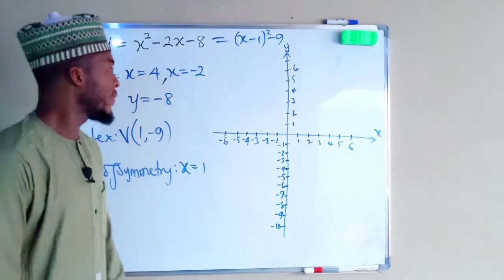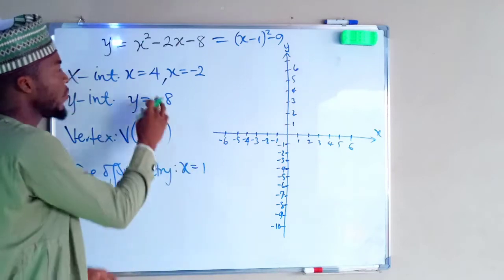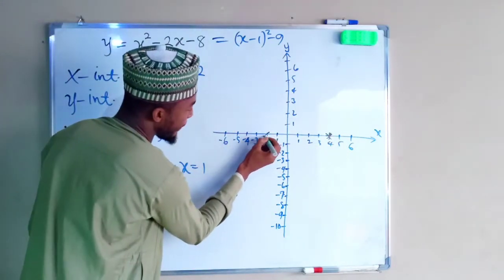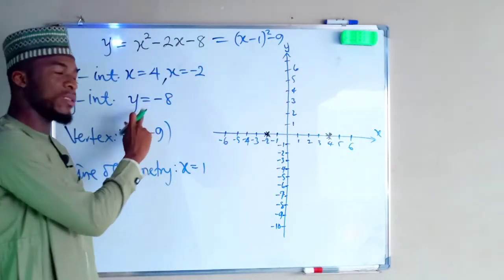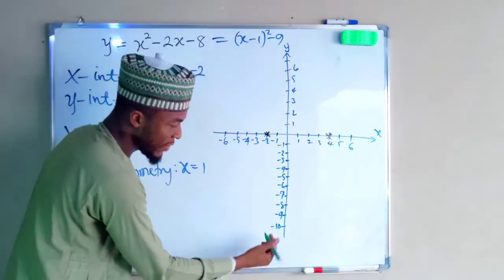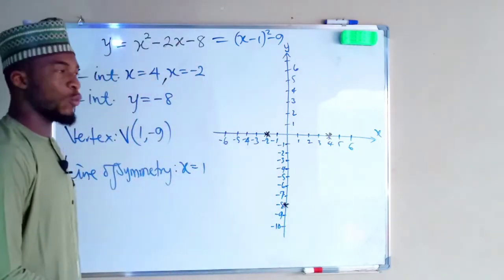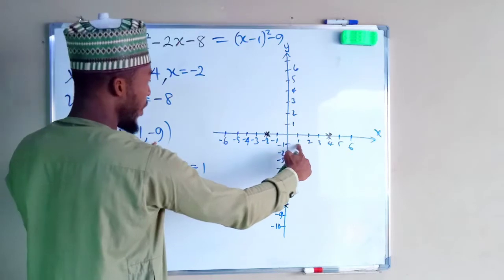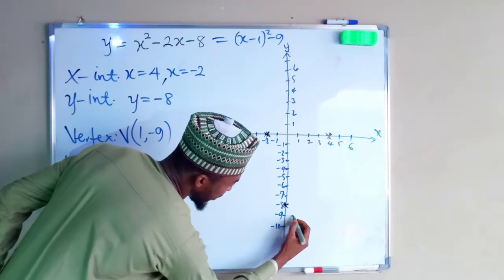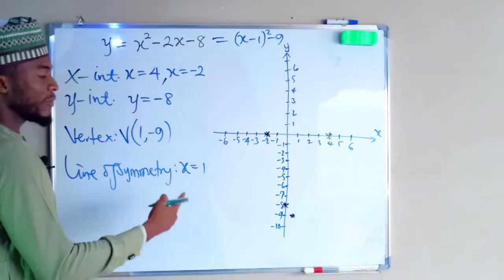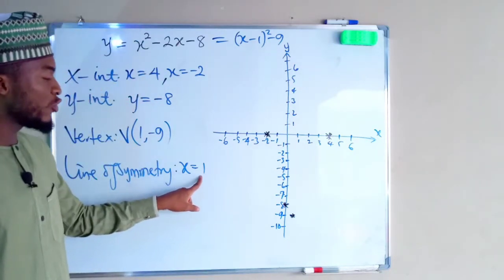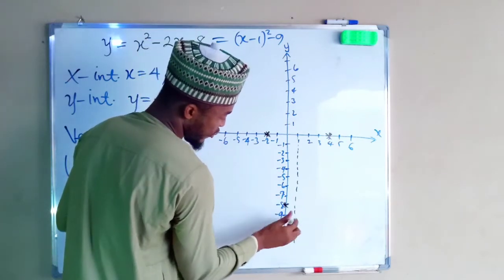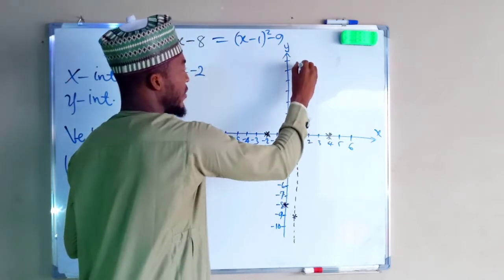Let us plot this information on our graph. The x-intercepts are positive 4 and negative 2 — I mark both points. The y-intercept is negative 8, which is where the curve touches the y-axis. Then the vertex, where the curve takes a turn, is at x equals 1, y equals negative 9. And the line of symmetry, the line that divides the parabola into two equal halves, is at x equals 1.